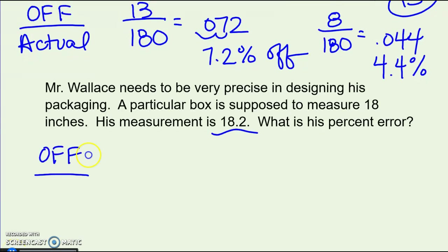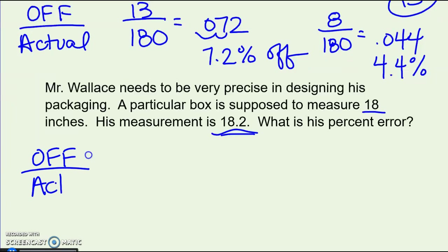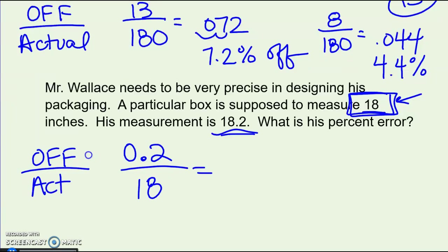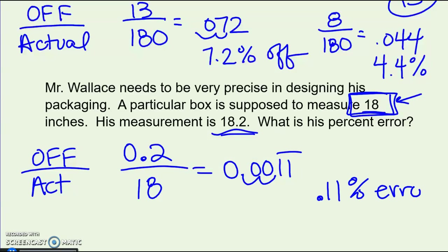Last example on percent error: a packaging engineer designs a box supposed to measure 18 inches, but it actually measures 18.2 inches. How much was he off by divided by the actual — he was off by 0.2, and the correct number was 18. Dividing gives a very small number. Moving it over two places gives 0.11% error in designing that box. Sometimes you get really tiny numbers — you can still have small percent errors.